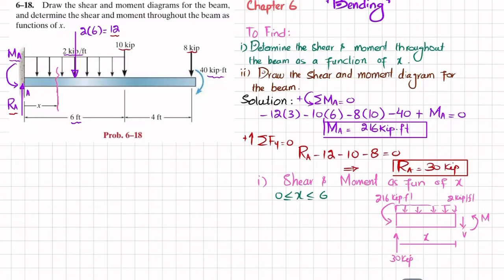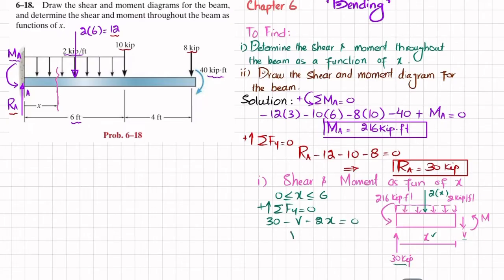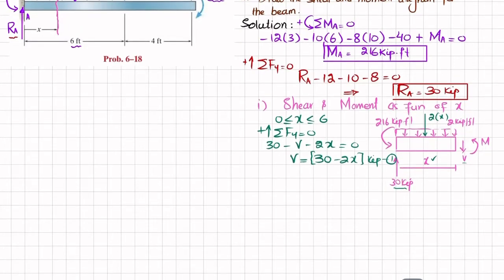Applying the sum of forces in the y-direction equal to zero with upward positive: 30 minus V minus 2x equals zero. Therefore the shear force V equals 30 minus 2x, in units of kips. This is equation number 1.